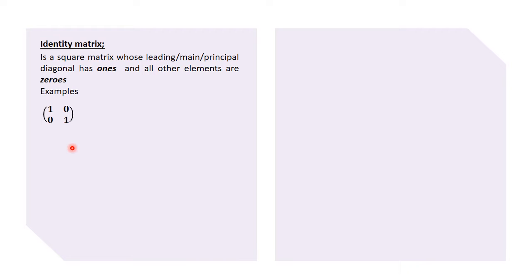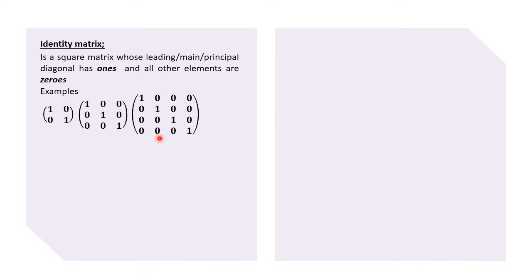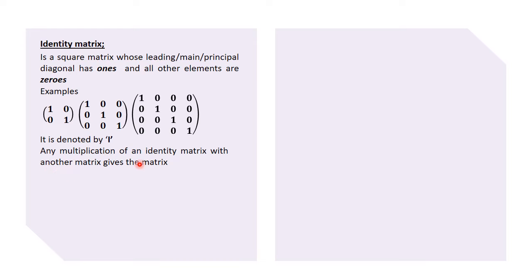All those diagonal positions have ones and all other elements are zeros, making it an identity matrix. It can be a two by two, three by three, four by four, or even a bigger matrix, so long as the main leading or principal diagonal has ones and all other elements are zeros. It is then an identity matrix.